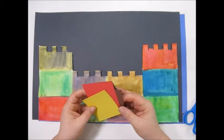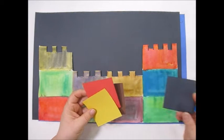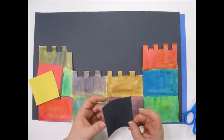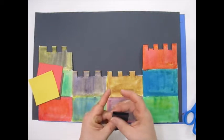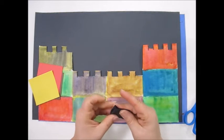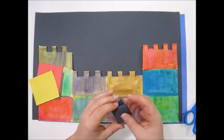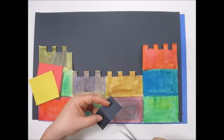With the small construction paper that I added, this is the detail that you can add to your castle. Maybe the black will be windows. So I can make squares for windows. I like to fold my paper and cut on the fold line.